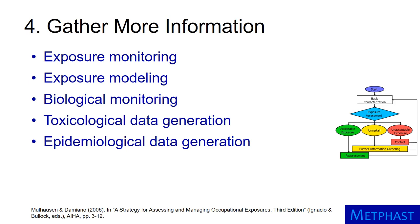If the exposure acceptability is uncertain, the occupational hygienist must gather more information. This may be accomplished by making more measurements to monitor exposures, estimating exposures using predictive models, and/or performing biological monitoring to measure internal doses. More detailed information may be gathered by performing toxicological studies using animals or epidemiological studies with data collected from groups of workers, to compare exposures to adverse health outcomes. More information gathering helps hygienists to make a better judgment of the acceptability of exposures by having better data.